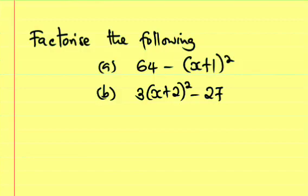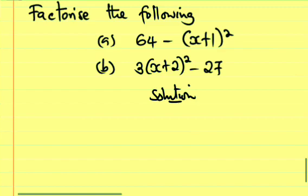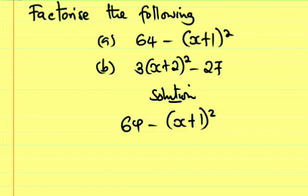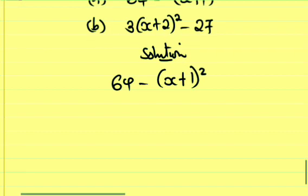Okay, let's see the solution of these two questions. The first one to factorize is 64 minus (x+1)². It's simple, applying the difference of two squares formula.